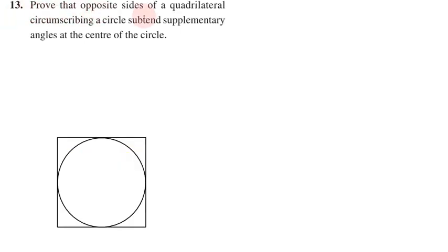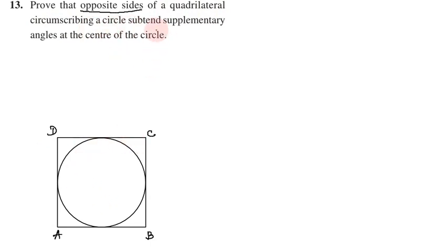Problem number 13: Prove that opposite sides of a quadrilateral circumscribing a circle subtend supplementary angles at the center of the circle. So, the opposite sides of a quadrilateral circumscribing a circle - opposite sides subtend supplementary angles at the center of the circle.